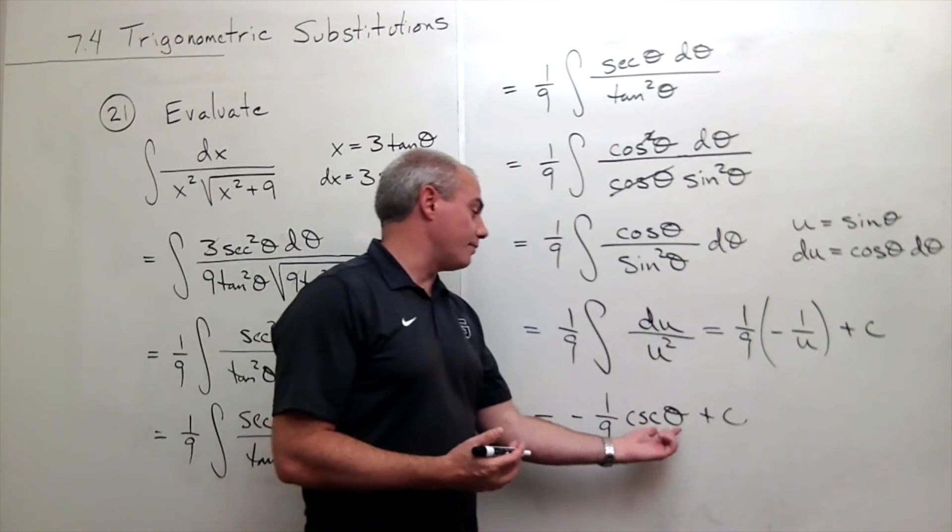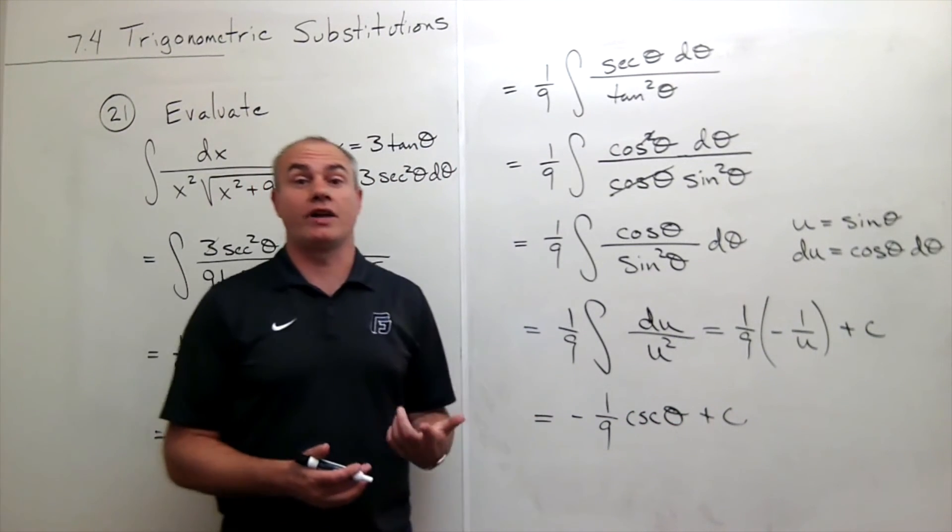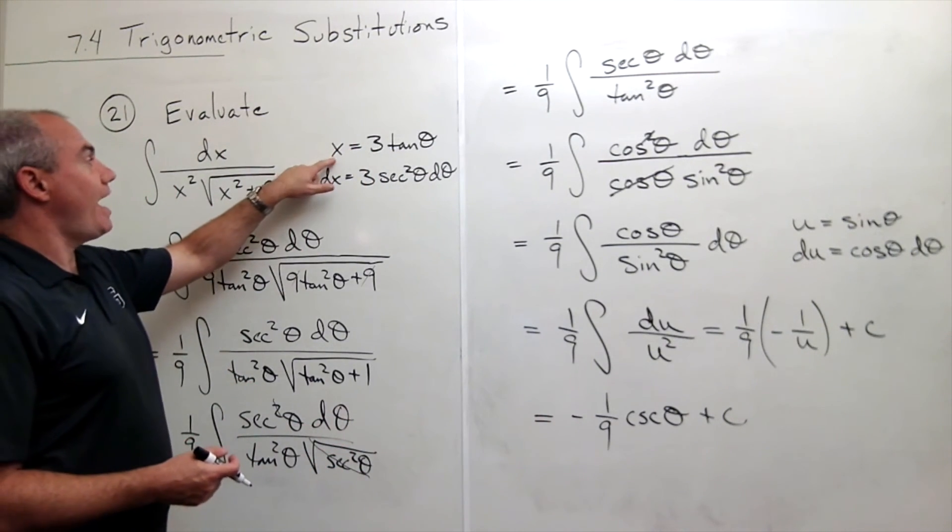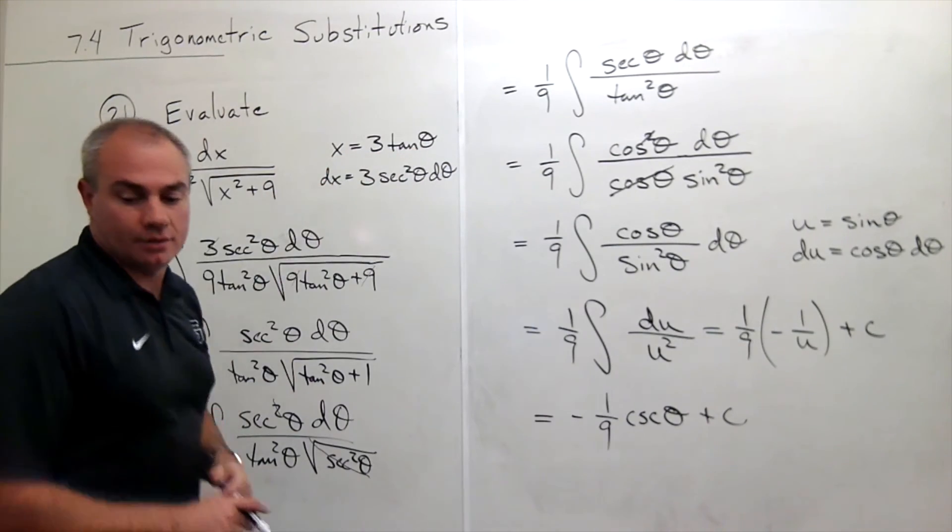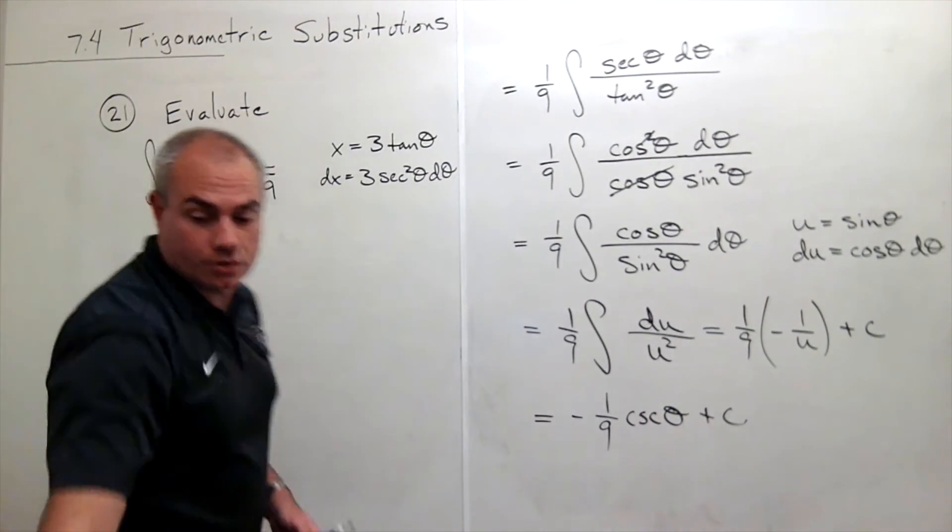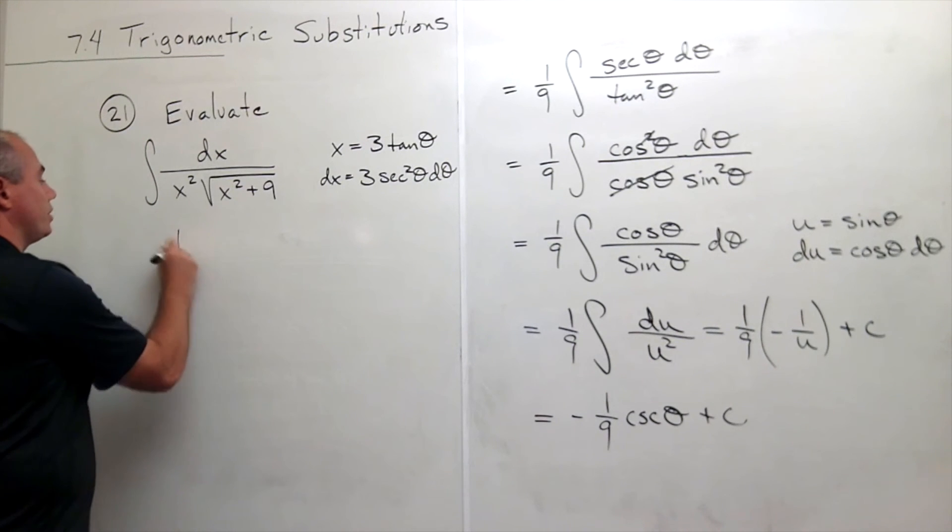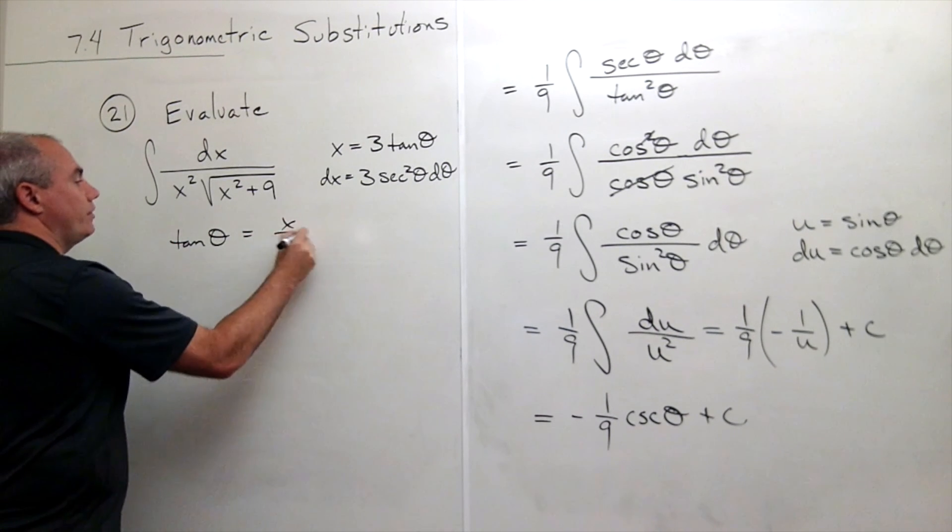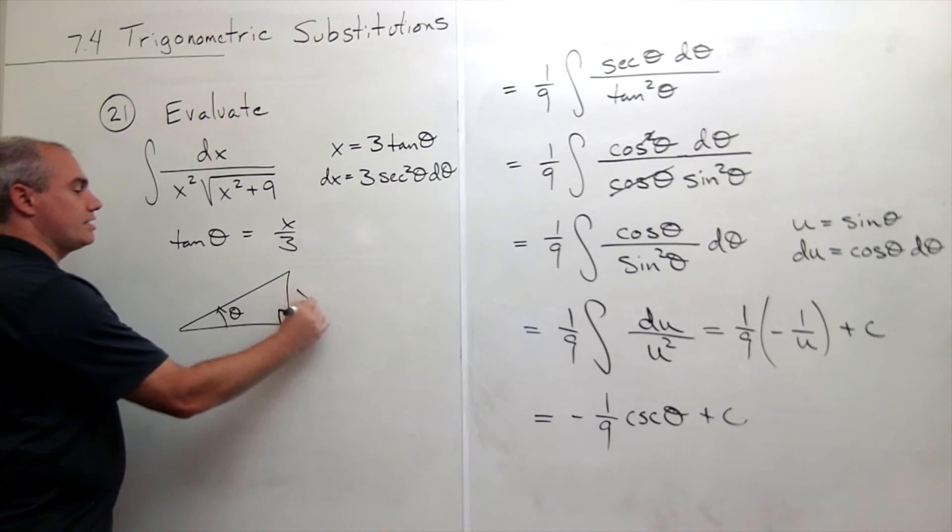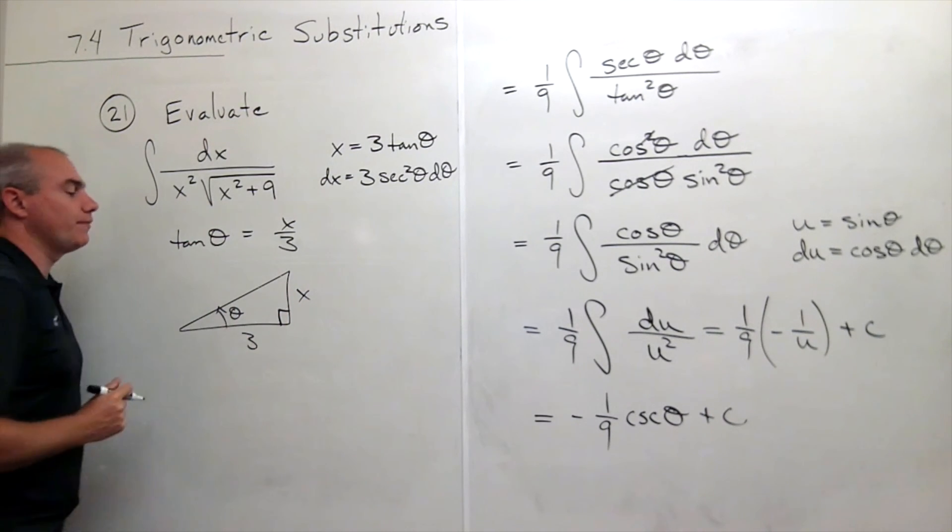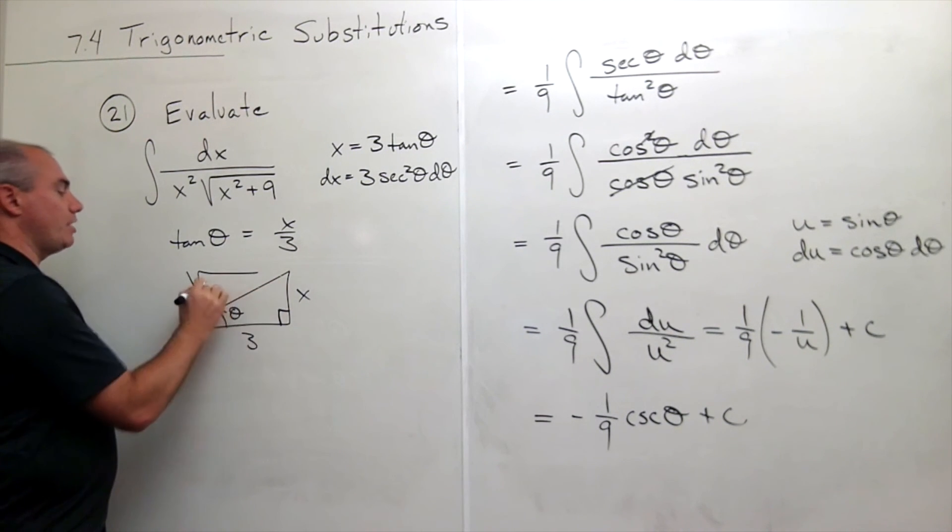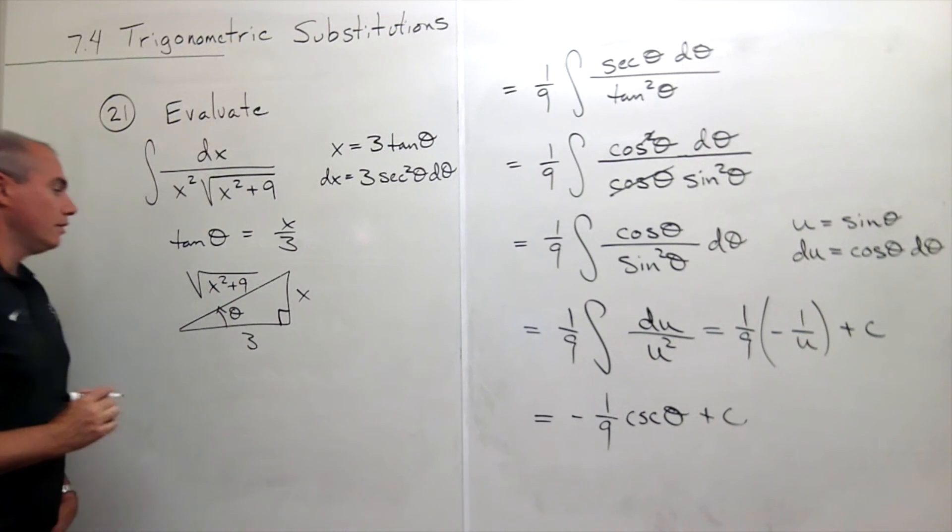But we're still not done because now we have the answer in terms of theta and we don't have the answer in terms of x. So we go back and we say, x is 3 tangent theta. So tangent of theta is x over 3. We can use a reference triangle now. And we can say if this is theta, then this is x and this is 3 because tangent of theta is the opposite over the adjacent. Which means that this side up here will be x squared plus 9. And now we're ready.